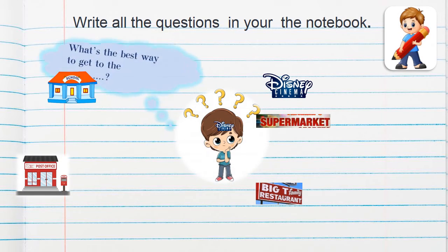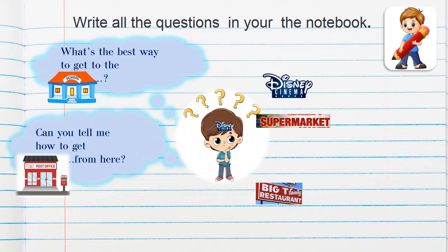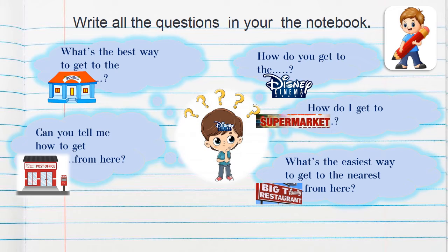Write all questions in your notebook. Most of them have the same meaning, but there are many ways we can ask. For example: What is the best way to get to the school? Can you tell me how to get to the post office from here? How do I get to the supermarket? What is the easiest way to get to the nearest restaurant from here? If you like cinema: How do you get to the Disney cinema? Many kinds of ways we can ask.